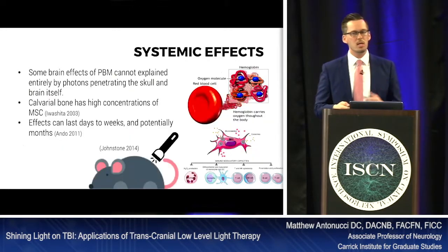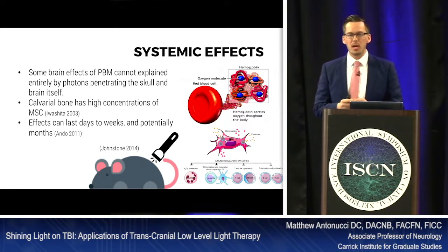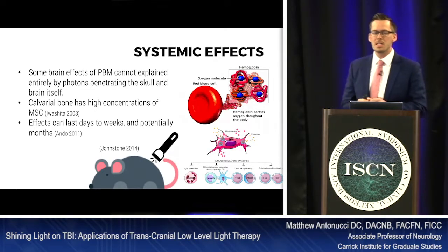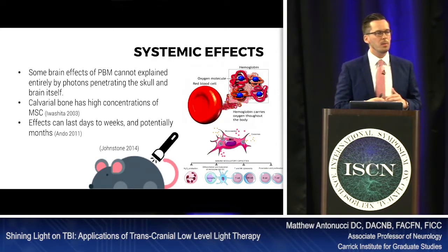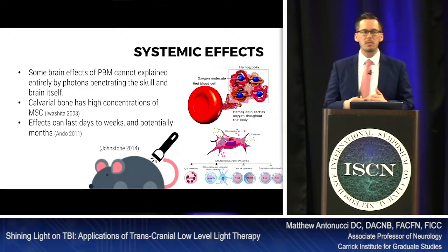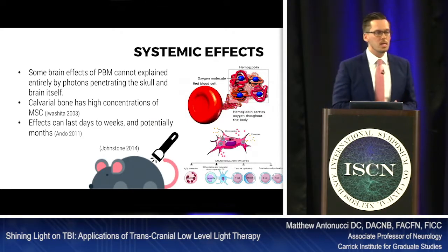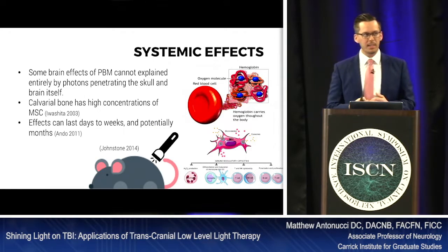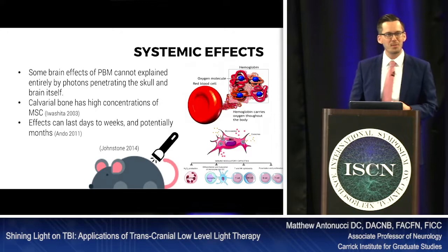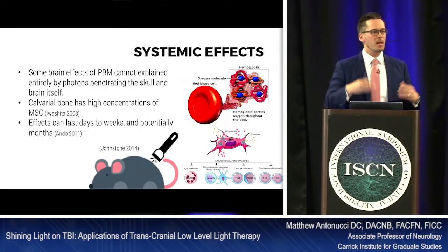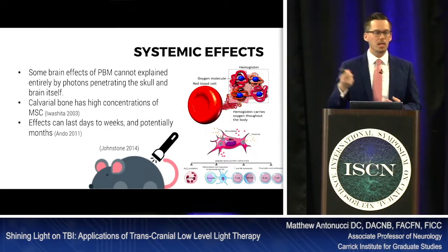There are also systemic effects. A notable study published by Johnstone in 2014 was skeptical about transcranial stimulation. They took MTPT rodents — rats with experimentally induced Parkinson's disease — and put tinfoil hats on them so light could not penetrate and affect their brain, but shined the light on their body. The rodents that had light shined directly on their brain had the best results in task speed, walking speed, and maze tests.